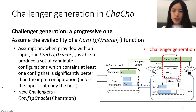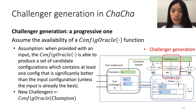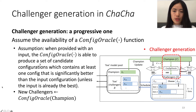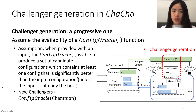In light of this, we decided to design a Challenger Generation component such that Challengers can be added progressively. We do this by assuming the availability of a Configuration Oracle function, which has the following property: when provided with a particular input, the Configuration Oracle is able to generate a set of candidate configurations which contains at least one configuration that is significantly better than the input configuration, unless the input is already the best.